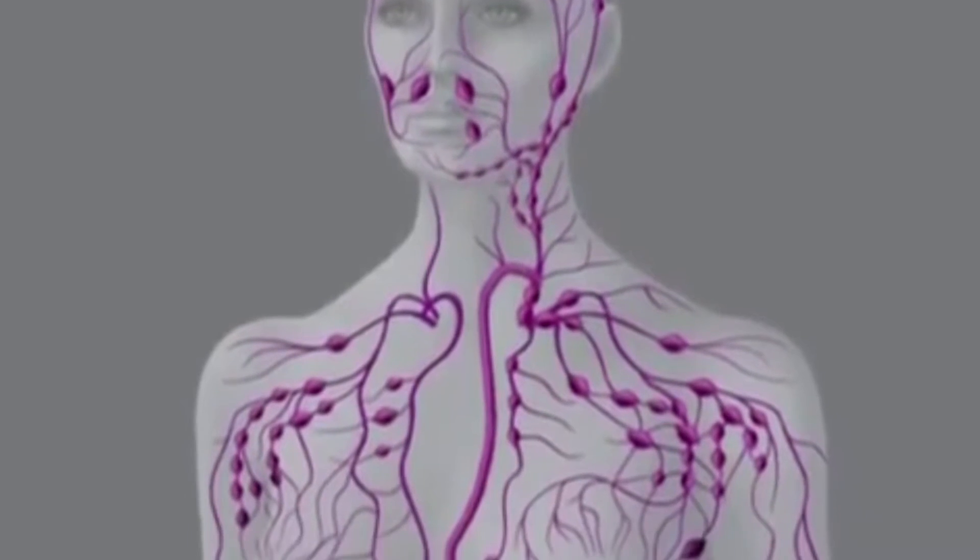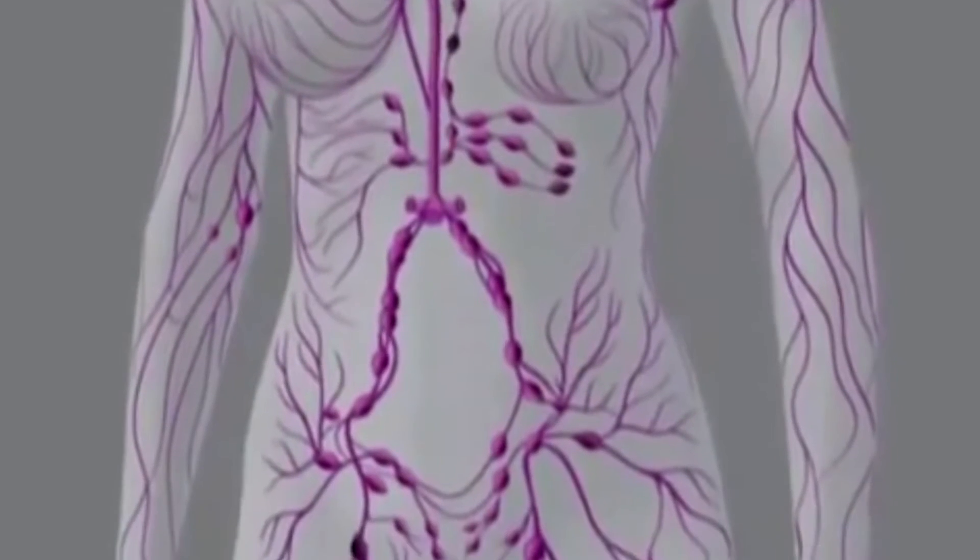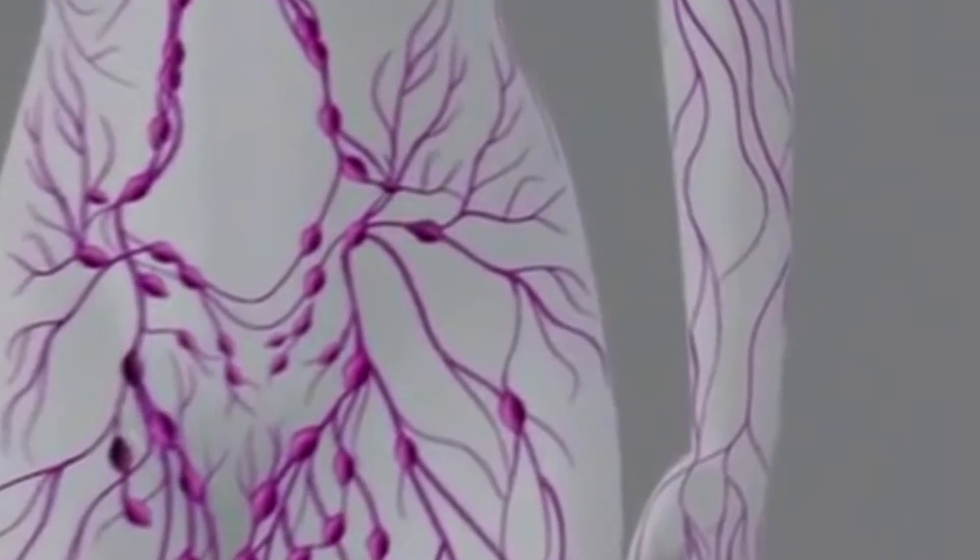The lymphatic system is part of the immune system. It also maintains fluid balance and plays a role in absorbing fats and fat-soluble nutrients.